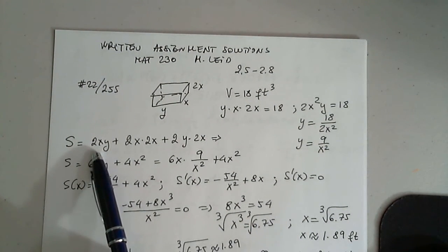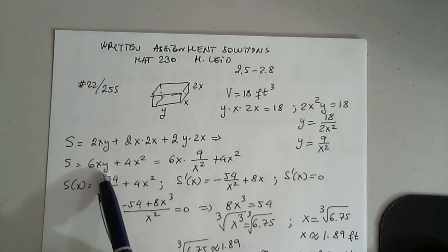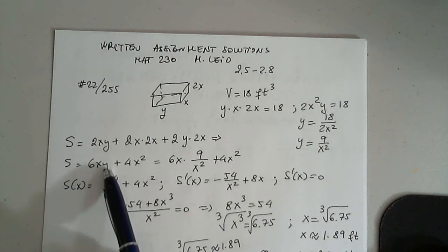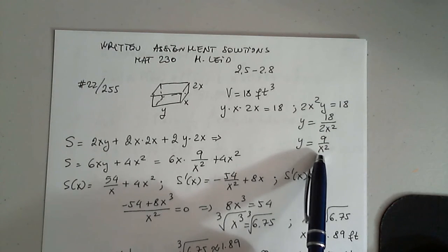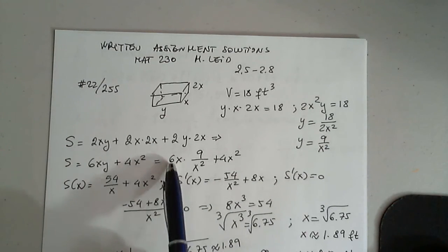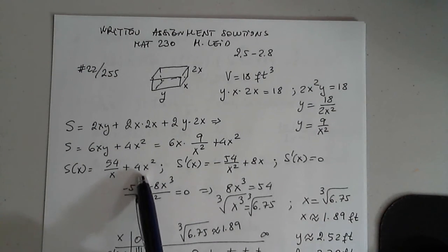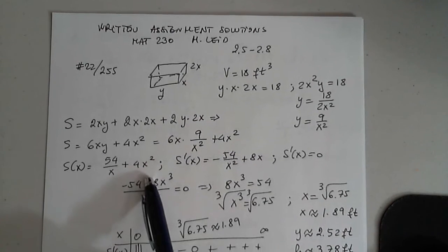So 2xy plus 4xy, 6xy, 2x times 2x is 4x squared. Of course, we will have to replace y by 9 over x squared in here. We simplify an x and we get 6 times 9, 54 over x, and then 4x squared.